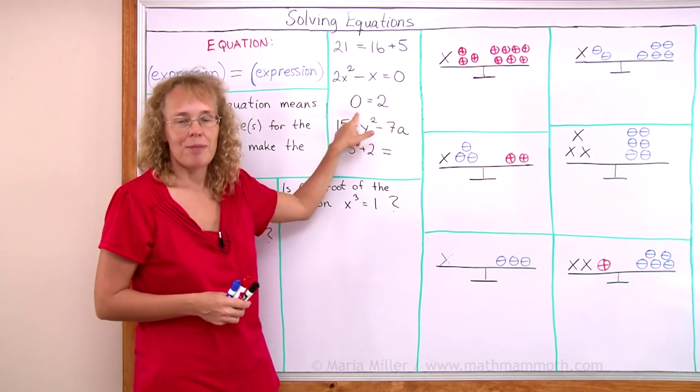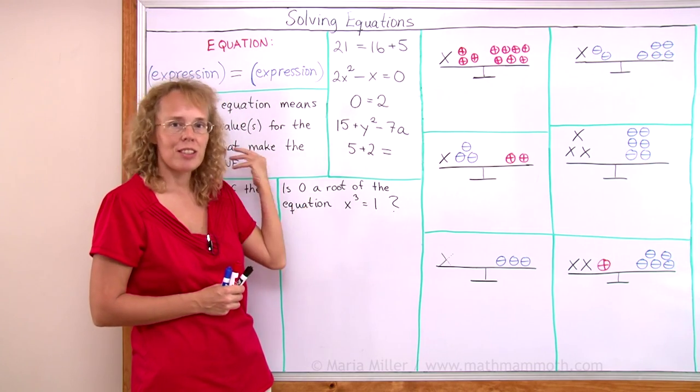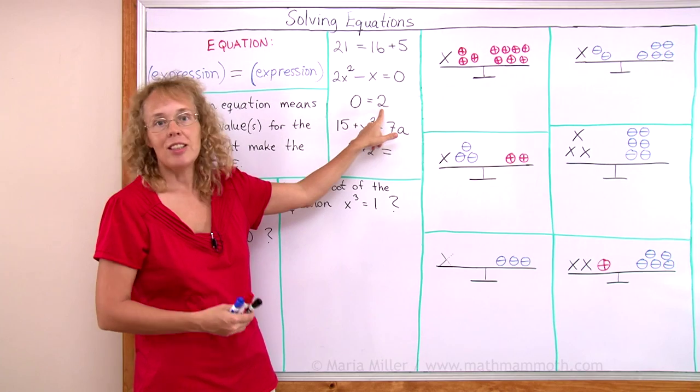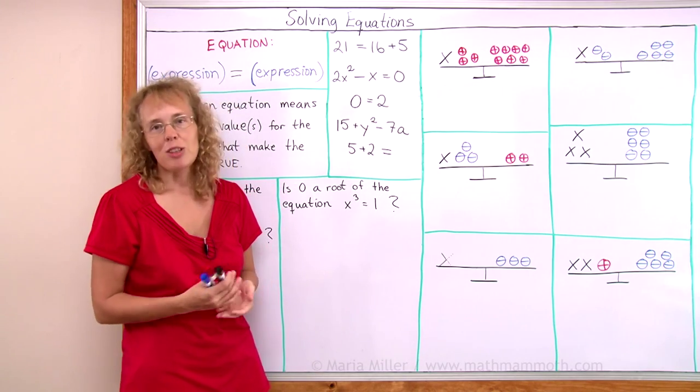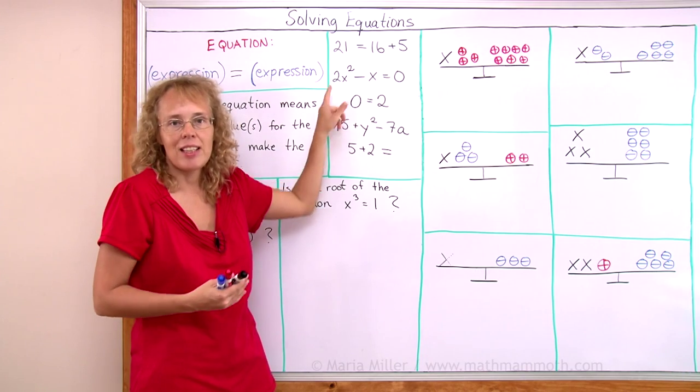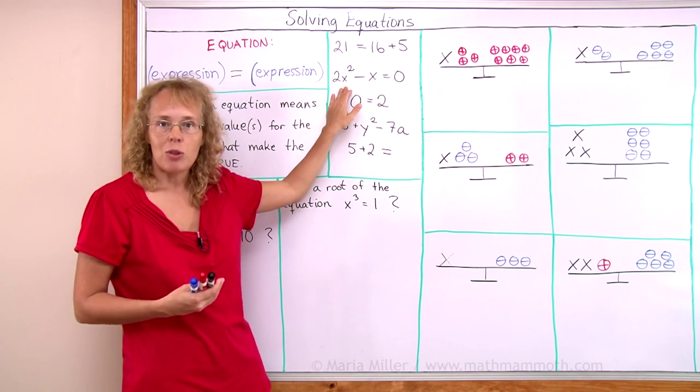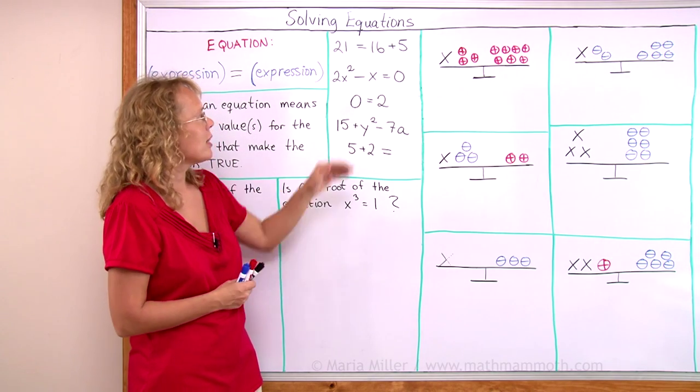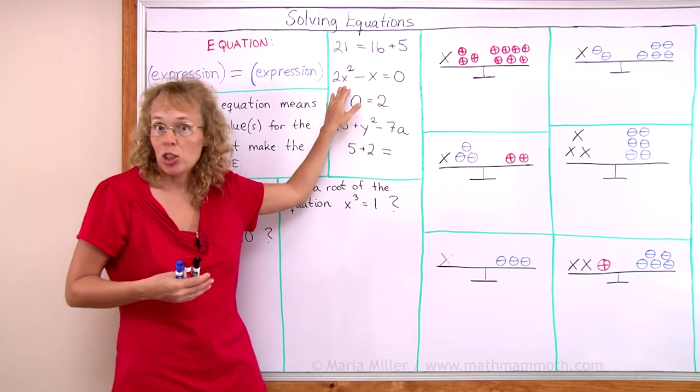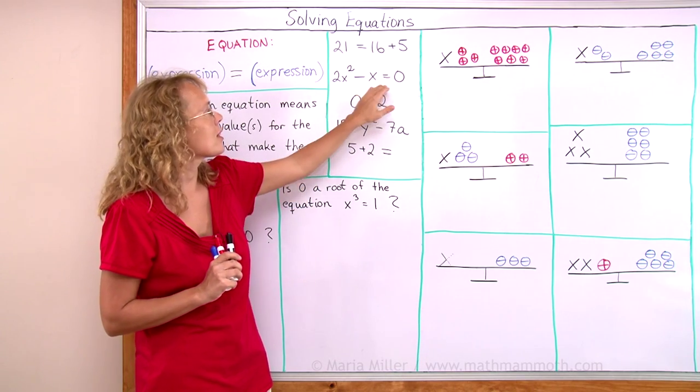Over here I have a false equation. It is an equation because I have an expression on the left side, then equal sign and then another expression. But it's a false equation. And here's an equation that we can't say if it is false or true because it has an unknown, the variable x there. But this is the type of equation where you can try to solve it. You can try to find the value of x that would make this true.